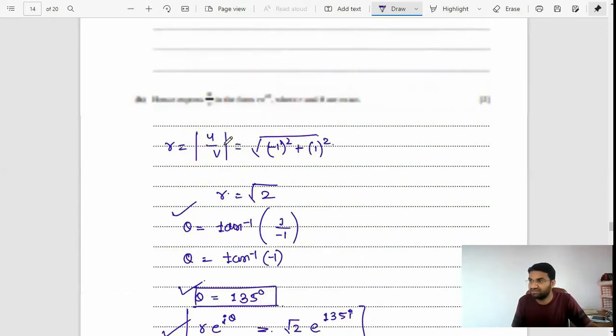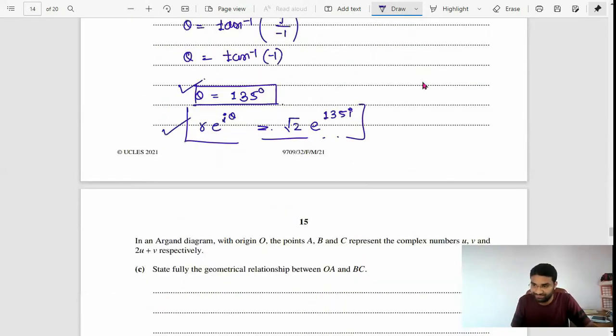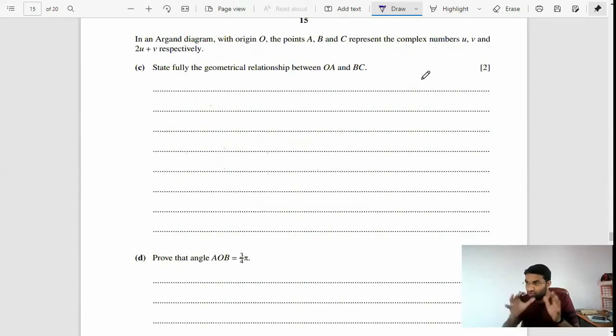If you analyze the whole A-level paper, they have distributed for each section a certain amount of marks. For complex numbers, they ask questions around 9 to 11 marks, not more than that. Next question: in the Argand diagram, O is the origin, A, B, C represent the complex numbers u, v, 2u plus v.